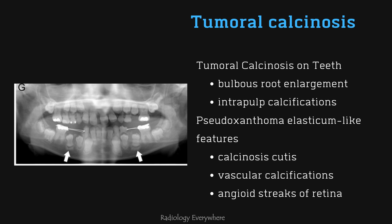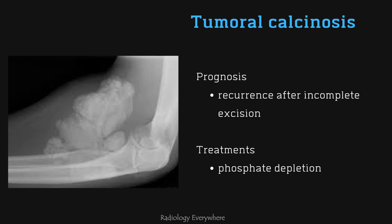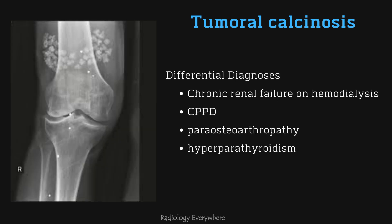You can also see pseudoxanthoma elasticum-like features, including calcinosis cutis, vascular calcification, and angioid streaks of the retina. When considering prognosis, there is a tendency for recurrence after incomplete excision. Treatment is phosphate depletion. The differential diagnosis mainly includes chronic renal failure on hemodialysis, CPPD, para-osteoarthropathy, and hyperparathyroidism.